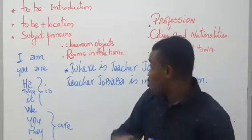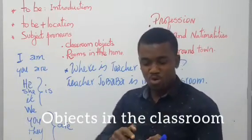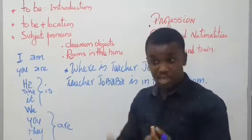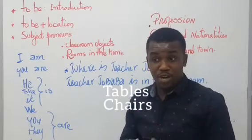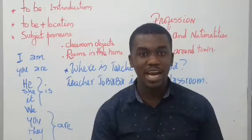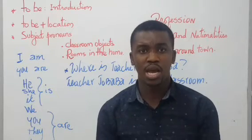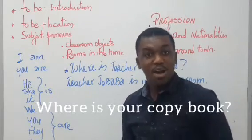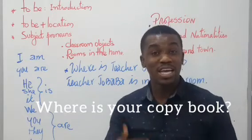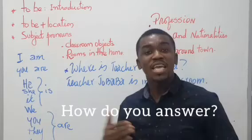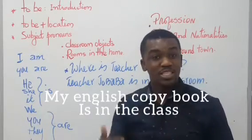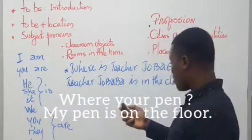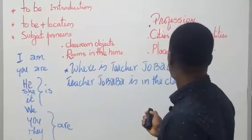When talking about a classroom, we have a lot of objects — bag, pen, table, chair, copy book. For example, if I go out and come back and don't see my English copy book, you ask: Where is your copy book? You answer: My English copy book is in the class. Where is your pen? My pen is on the floor.